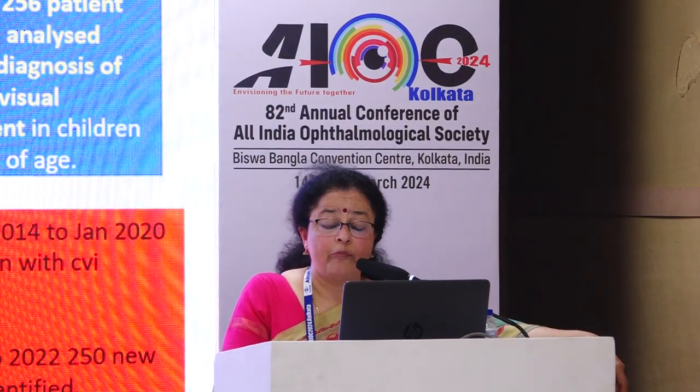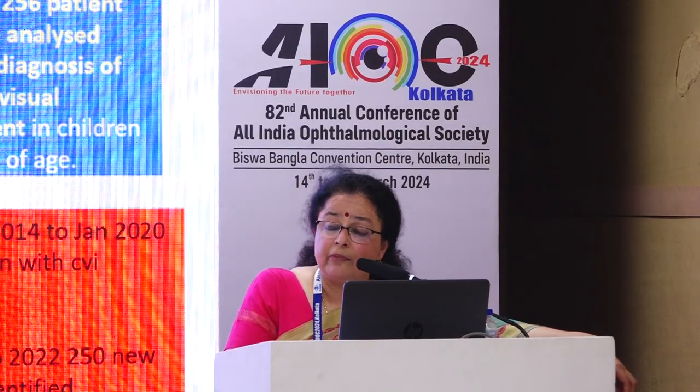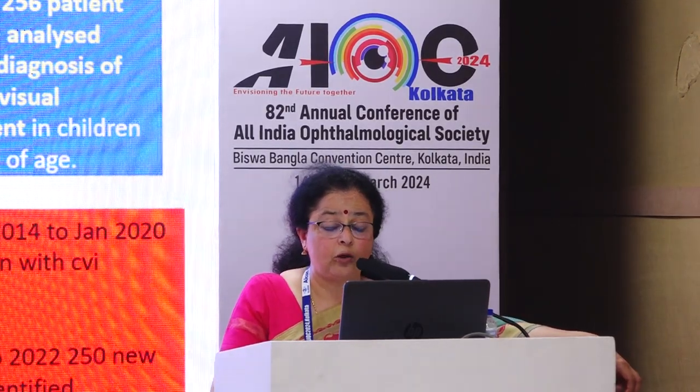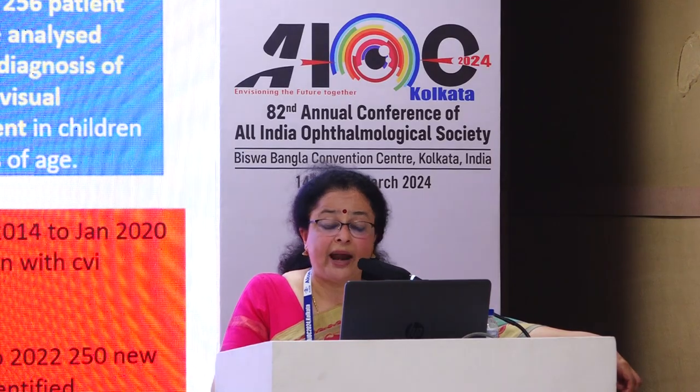CVI is becoming important because it is emerging as one of the commonest causes of visual impairment among children in our country, and also because of multiple disabilities associated with CVI, assessment and management of children is a specialized and challenging field. From 2014 till now — around 10 years — we have seen more than 1000 children. We need to identify and manage these children.